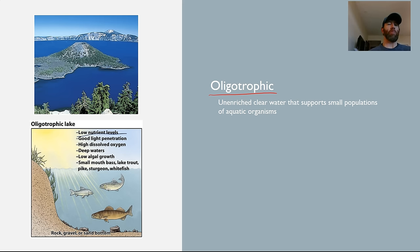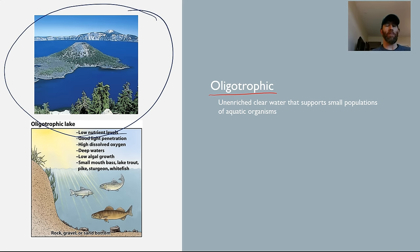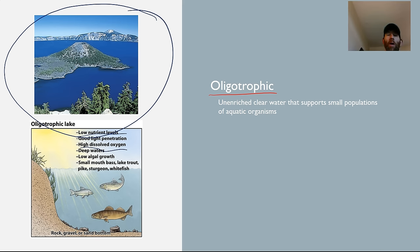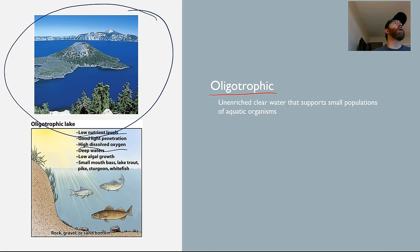This is Crater Lake, by the way — if you ever get a chance to go there, I highly recommend it. Oligotrophic bodies of water have low nutrient levels, really clear water with great light penetration, and high dissolved oxygen in deep water. There's not a lot of algae, and the types of fish living there are smallmouth bass, lake trout, sturgeon, and whitefish — really common in the western US and the Northwest specifically.